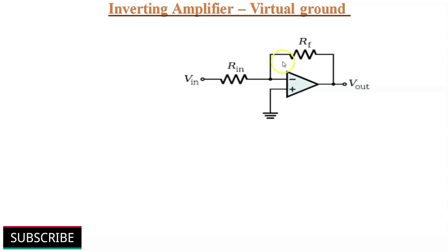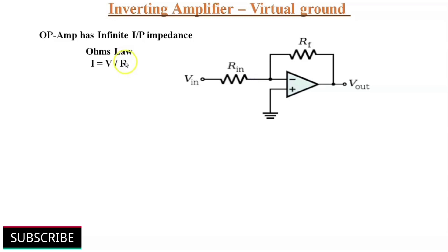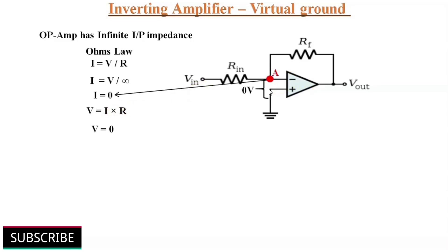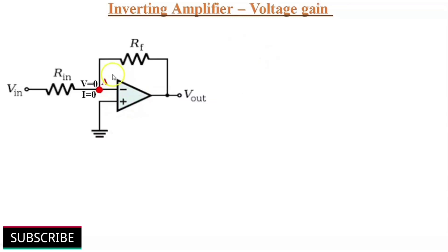Concept of virtual ground. It is applicable when we are providing negative feedback. As we know, op-amp has infinite input impedance. According to Ohm's law, I is equal to V by R. Here R is infinity, so I is equal to V by infinity, which means zero current at the inverting input at point A. As V is equal to I into R, so there is also zero voltage at point A. Then there is no voltage drop between inverting and non-inverting inputs, or V+ is equal to V− which is equal to zero. This means the voltage at inverting input at point A is zero, because the non-inverting input is grounded. The zero volt at inverting input at point A is referred to as virtual ground, because it is at zero volts but not physically connected to ground.